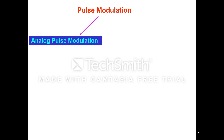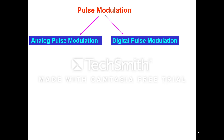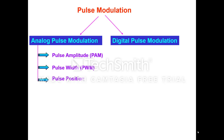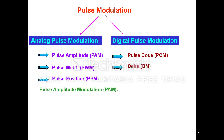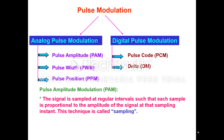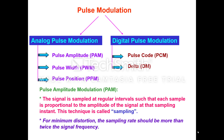Pulse modulation is basically divided into analog pulse modulation and digital pulse modulation. Analog pulse modulation is further divided into pulse amplitude modulation (PAM), pulse width modulation (PWM), and pulse position modulation (PPM). Digital pulse modulation includes pulse code modulation, delta modulation. In pulse amplitude modulation, the signal is sampled at regular intervals such that each sample is proportional to the amplitude of the signal at that sampling instant. This technique is called sampling. For minimum distortion, the sampling rate is usually taken more than twice the signal frequency, which is also called the Nyquist criteria.